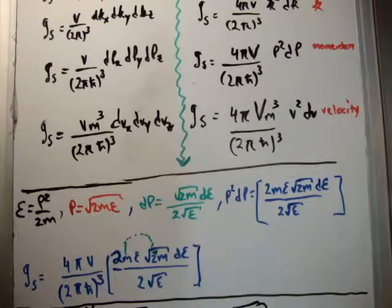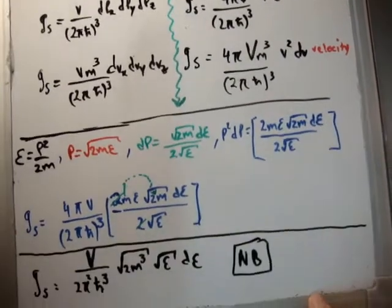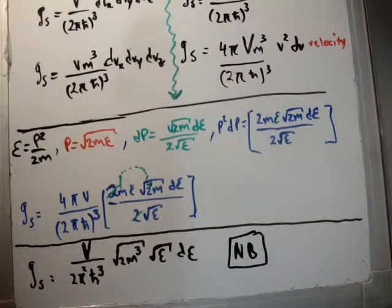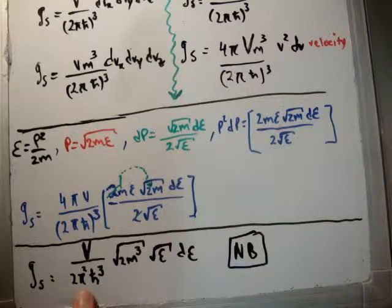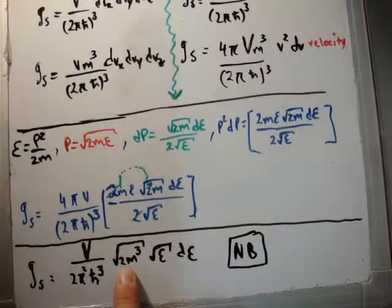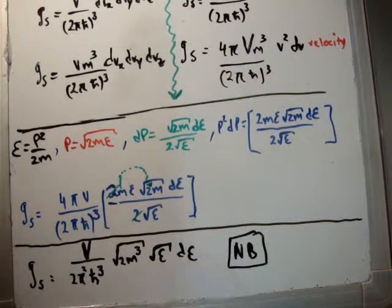Note that this 2 and this 2 cancel, and that 2 cubed and 4 turn out to be 1 over 2 as well. So the final form is this. Plug them all together. The density of states in energy space is the volume in real space, divided by 2π² h-bar cubed, multiplied by the square root of 2m cubed, times √E dE.